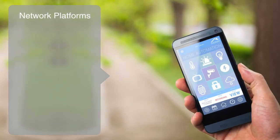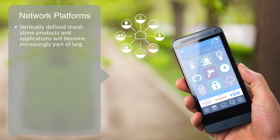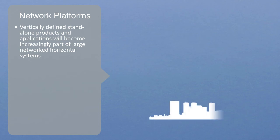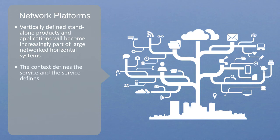Within this paradigm, technology is less about things and more about platforms. The Internet of Things is not a device or object; it is a platform or network that integrates components in order to deliver functionality. Vertically defined, standalone products and applications will become increasingly part of large, networked, horizontal systems, and defined by their role within that network. When systems become unbundled, devices and technologies are available for reconfiguration through different networks depending on the context, and thus the context defines the service, and the service defines the network, which brings together the actual physical technology components.